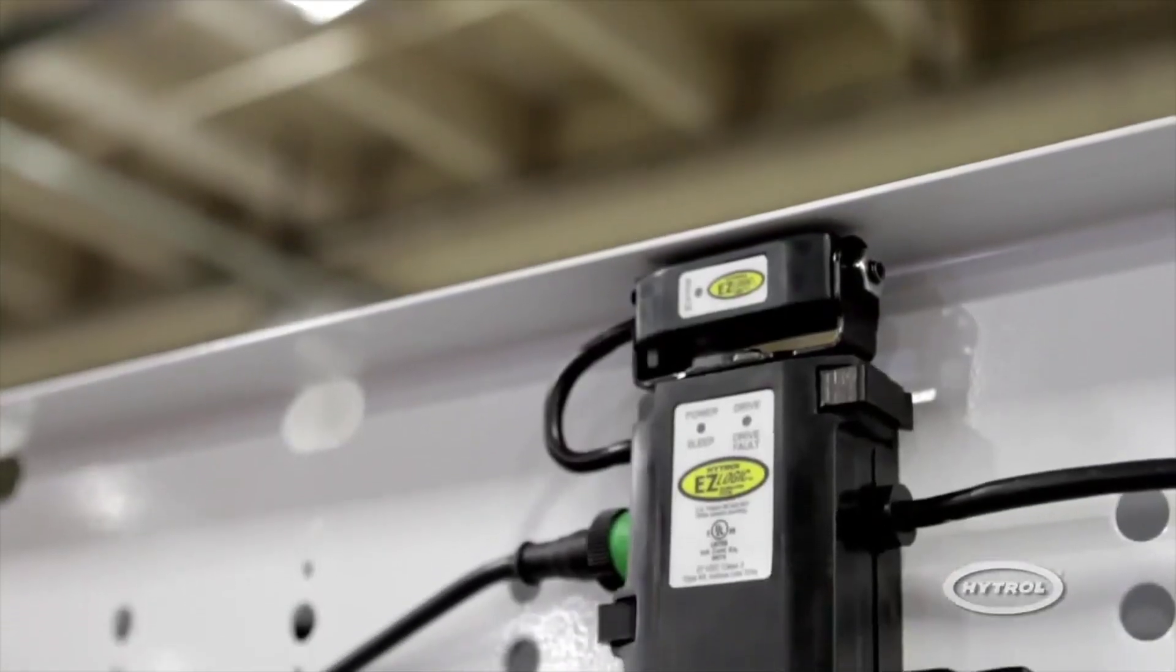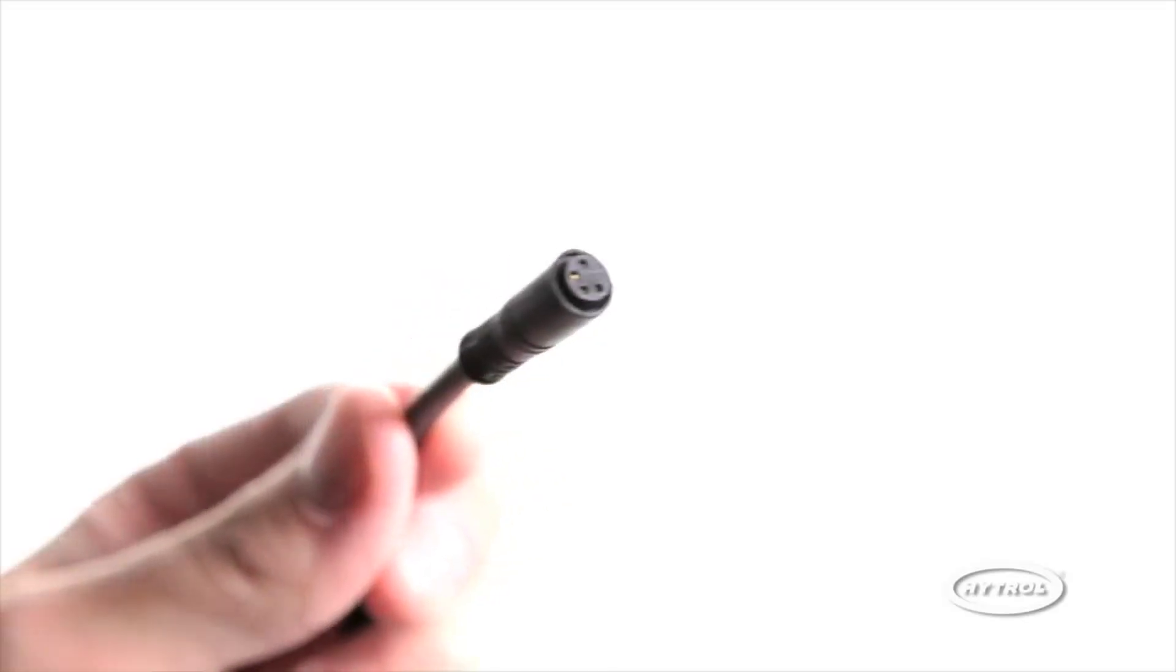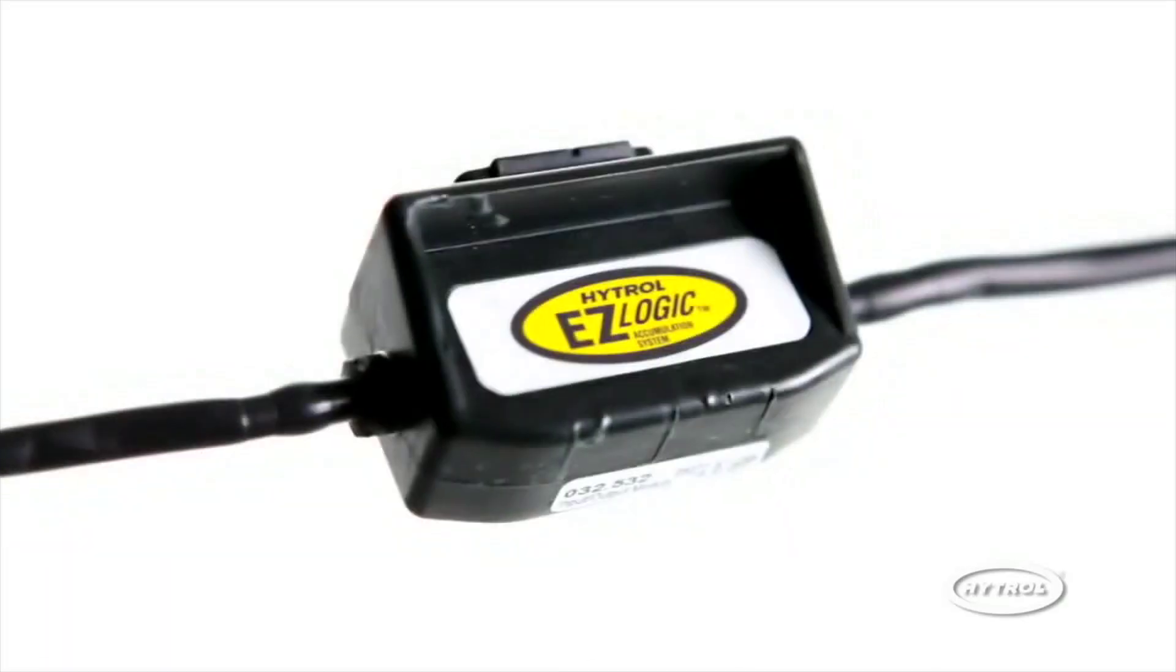Inputs and outputs can be wired to any zone controller on the conveyor using an auxiliary input cable or auxiliary I.O. module.